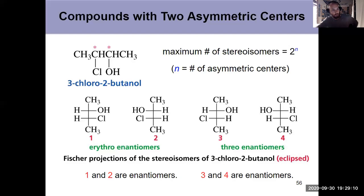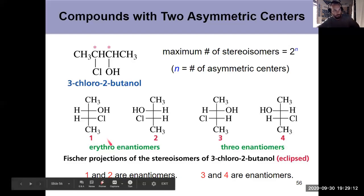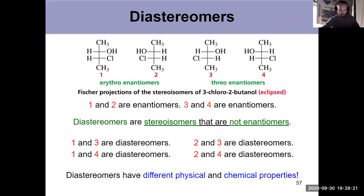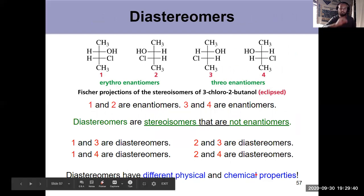So the natural question is, what's the relationship between one and three and four? Or two and three and four? Because they're not enantiomers. So what are they? And those are called diastereomers. Diastereomers. Those are stereoisomers that aren't enantiomers. So they're not the same molecule, but they're also not mirror images. Because if they were mirror images, they'd be enantiomers. So stereoisomers that aren't enantiomers. And that's significant because they have different physical and chemical properties.